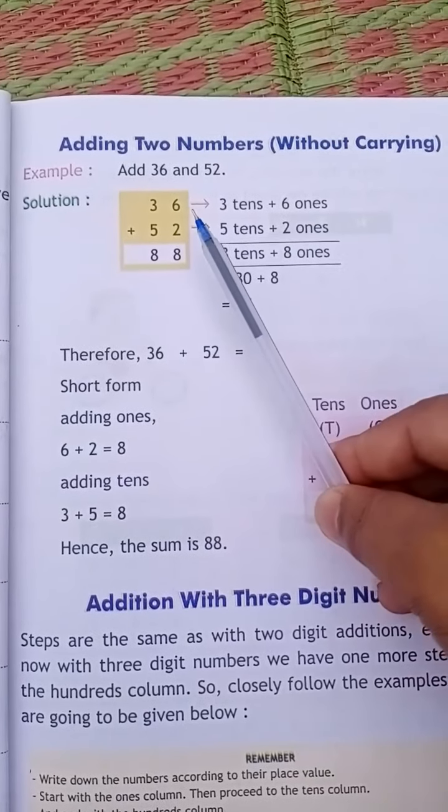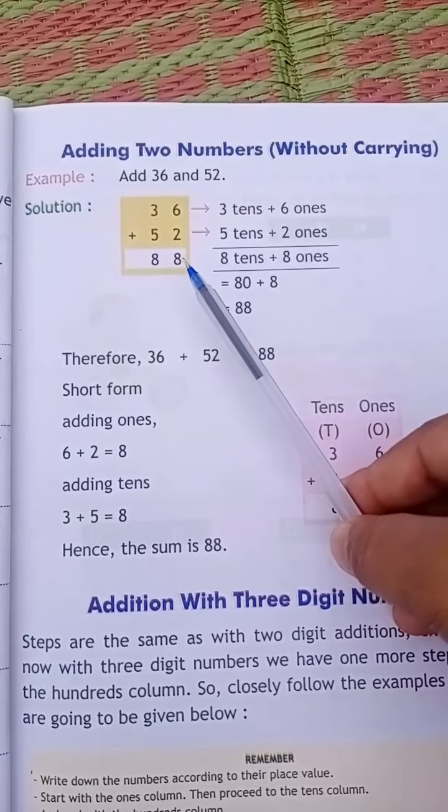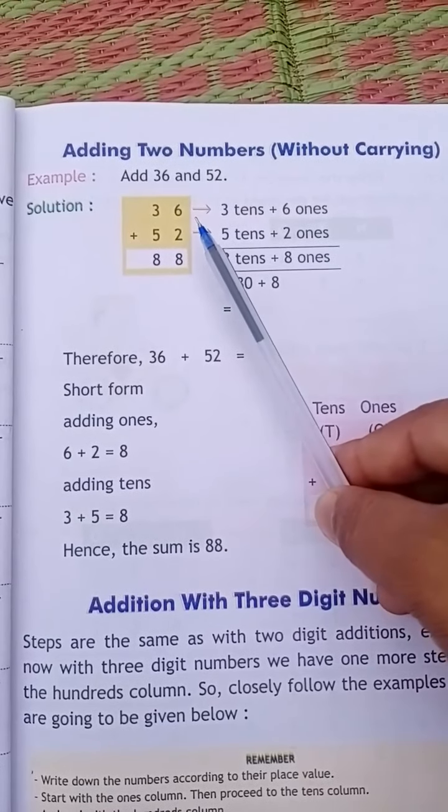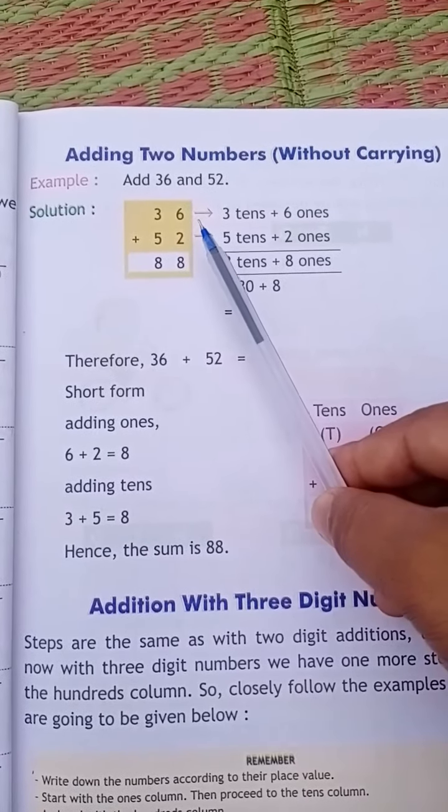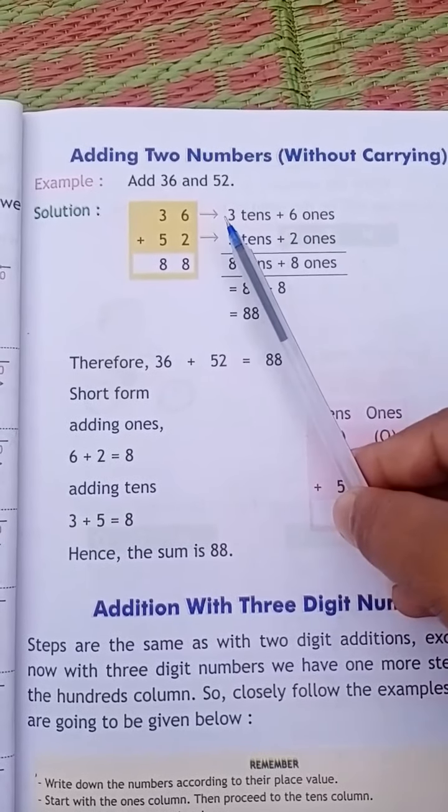So, 6 plus 2 equals 8. Then 6 plus 2. What will we do here? Starting from 6, we will count two numbers. You can also draw two lines next to the 2.